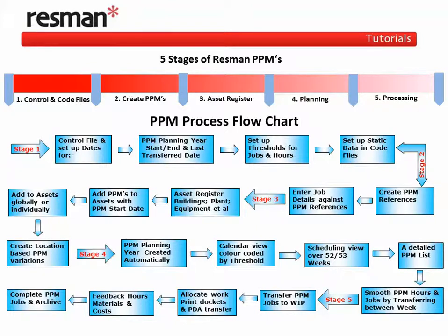The ResMan PPM planning year contains all PPMs due in a user-definable 12-month period and is stored by week number. We set the start and end dates for each year. The plan can be fine-tuned at any time during the year, and work is transferred at regular intervals into work in progress when it falls due.